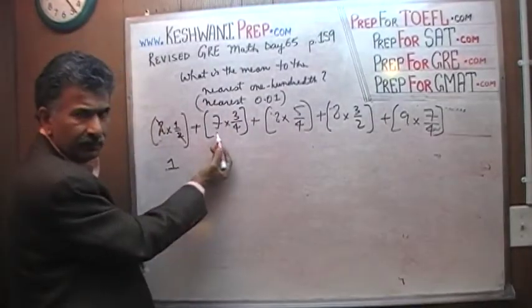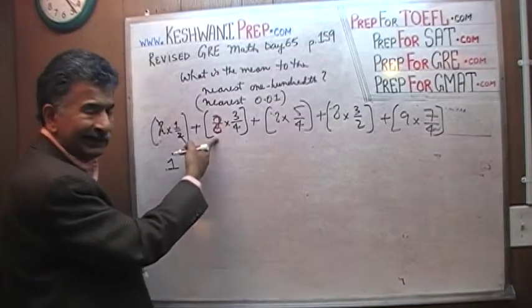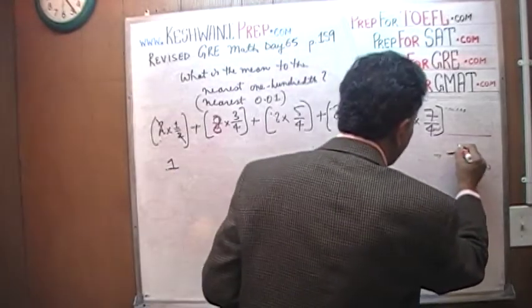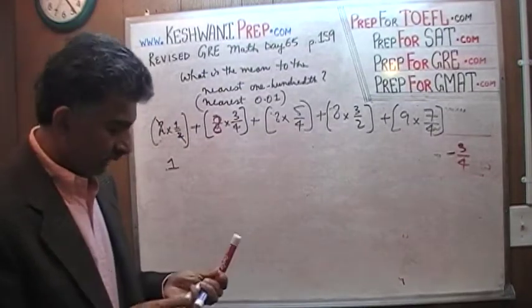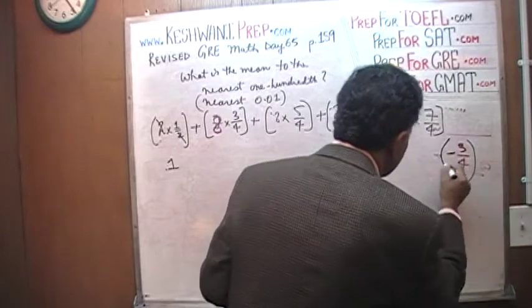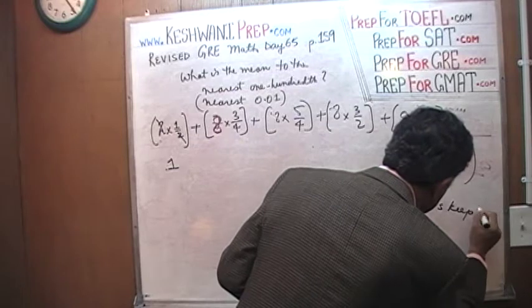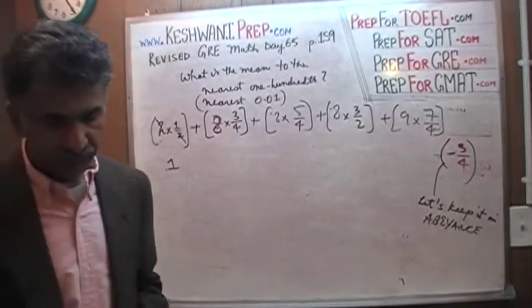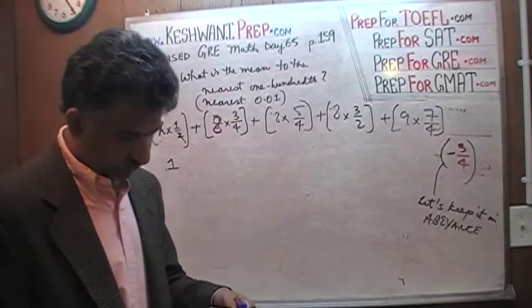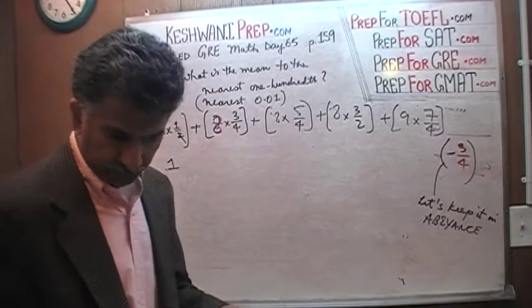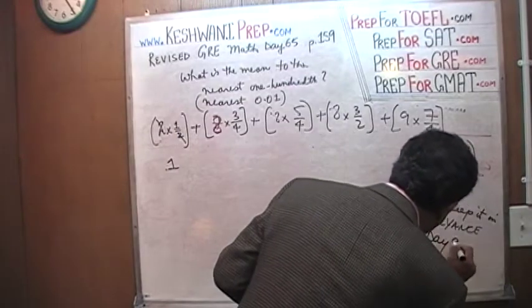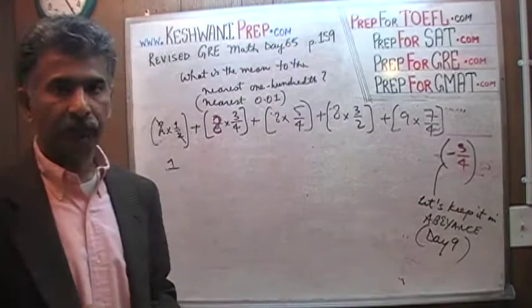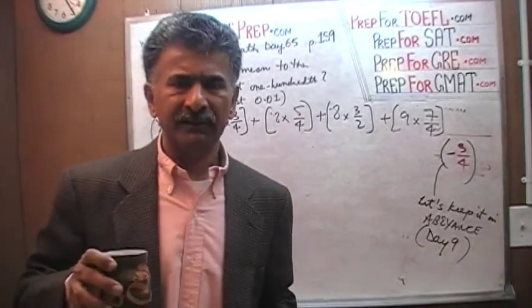This is a seven, isn't it? I'm going to pretend it is an eight. So instead of seven three quarters, I'm pretending that we have eight three quarters, which means I'm pretending that we have one more three quarters than we actually do. So I need to subtract one three quarters. We'll deal with that. Let's keep this in abeyance. And if you do not know what that word means in the context, just type in vocabulary day nine with my name, Keshwani, and you will learn this word. It just means to keep it aside. We'll deal with it later.